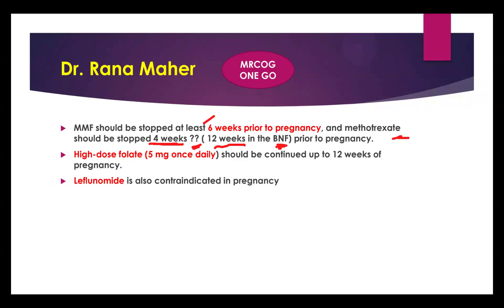In the BNF, the methotrexate stopping period is still 12 weeks, so keep that for exam purposes. Don't forget high-dose folic acid — 5 mg daily — should be continued up to 12 weeks of pregnancy. This is one of the indications for high-dose folic acid. Leflunomide is contraindicated in pregnancy.